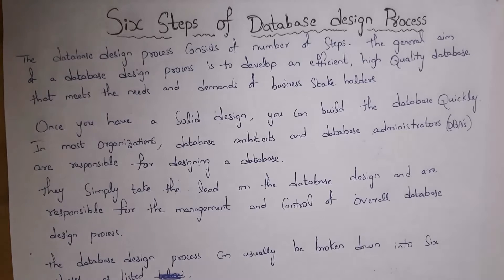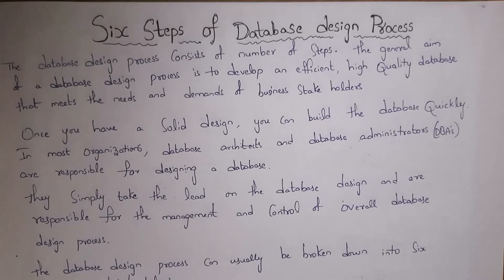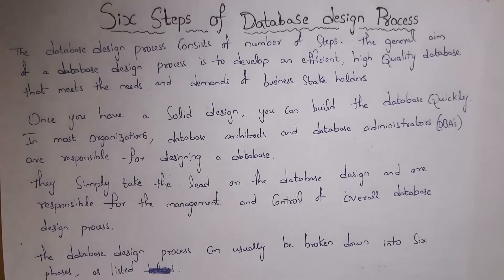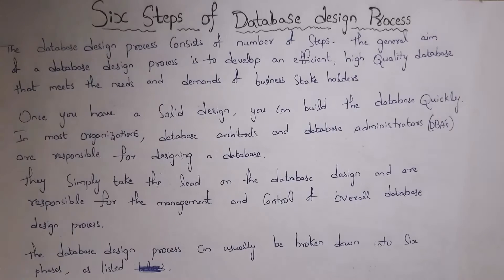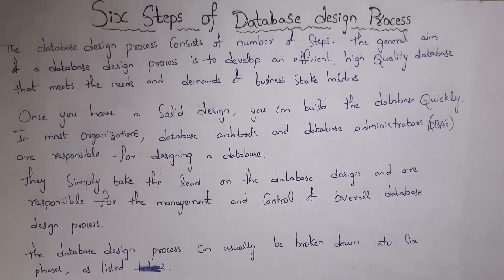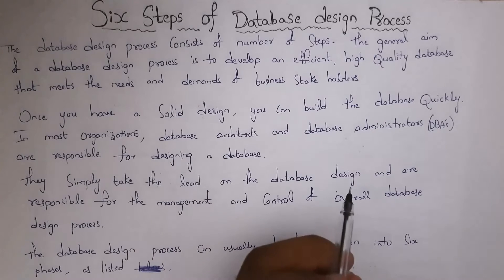Let's get started. In total there are six steps in the database design process, and the main aim of this process is to develop an efficient and high-quality database. Once we have a solid design, we can easily develop the database. In a software company there is a database architect and a database administrator, and their main duty is to design the database.